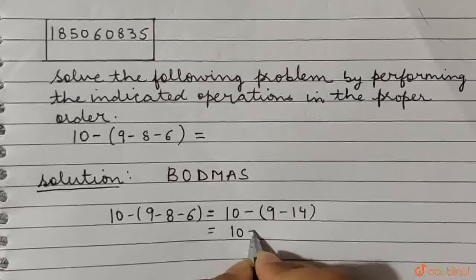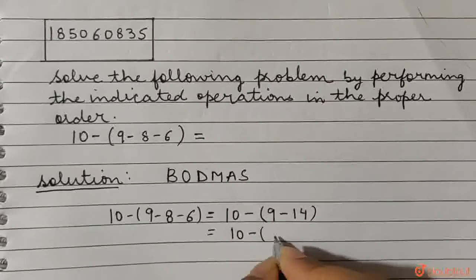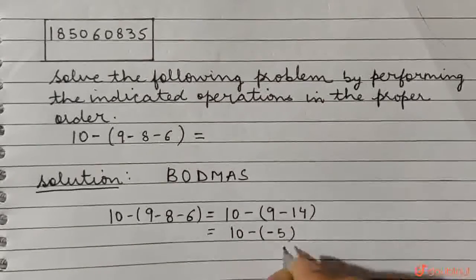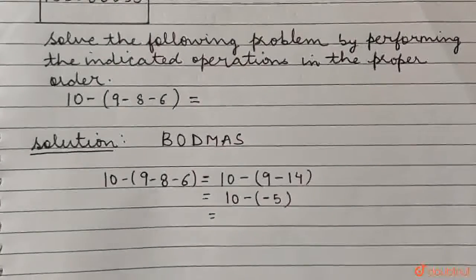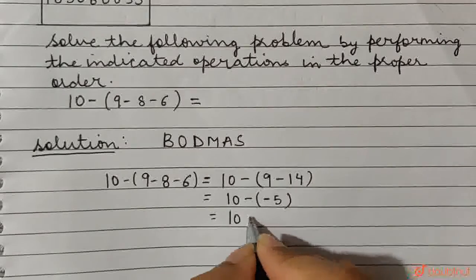we have 10 minus 9 minus 14, which gives us minus 5. In the next step, we have 10 minus and minus becomes plus.